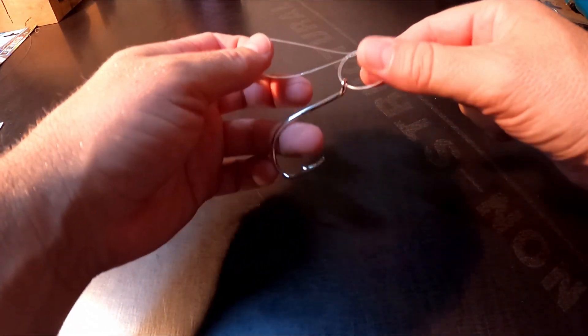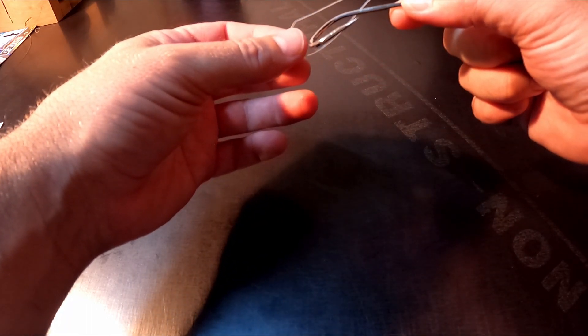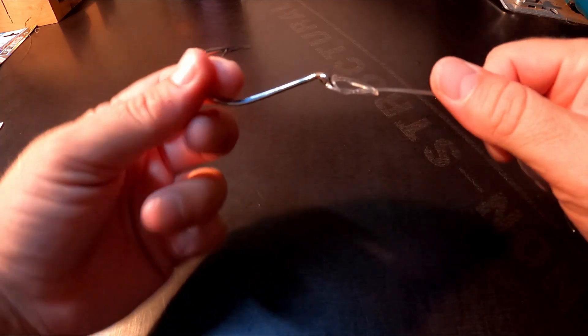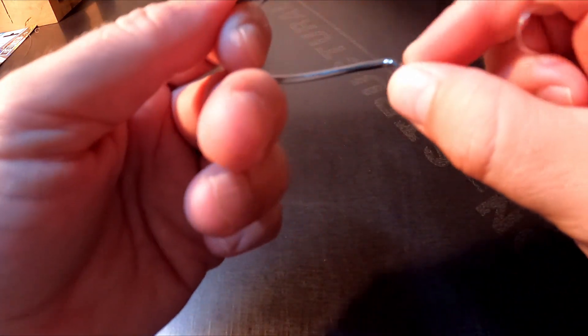Next step is you pass that loop over the gap of the hook. Now you want to pull both tag lines, making sure that doesn't tangle up.